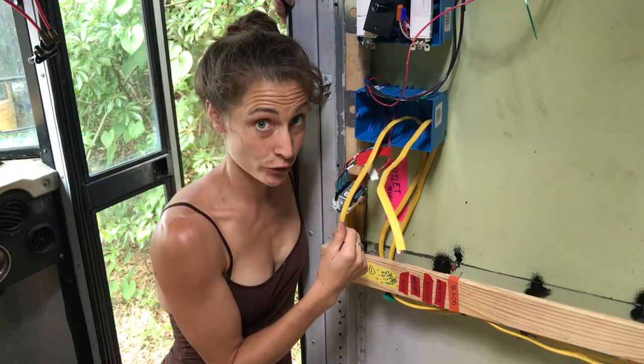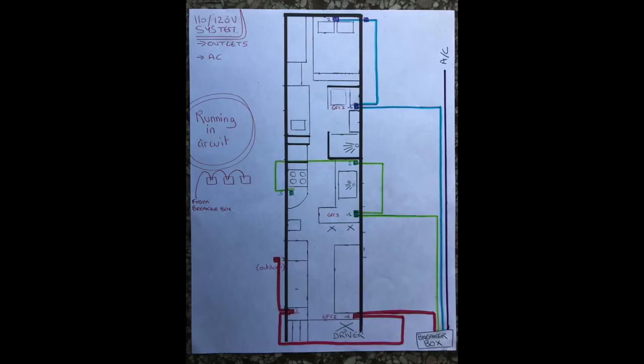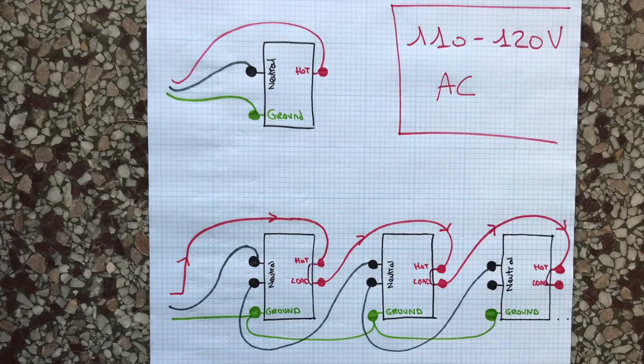I'm now installing the 120 volt outlet. We've been running our wire in circuit, which means from the breaker box it goes to the first outlet, and then there's another wire from the first outlet to the second outlet, and then from the second to the third.